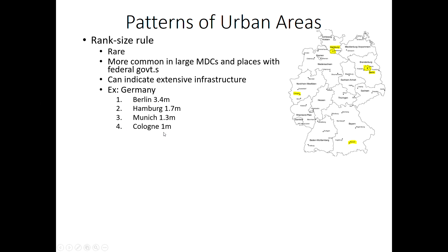Looking at Germany's fourth largest city with 1 million people: if it exactly followed the rule, the population would be about 850,000 — one quarter of 3.4 million. So rank size rule tells you the second largest city has population x divided by 2, the third has x divided by 3, the fourth has x divided by 4, and so on.